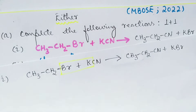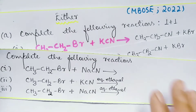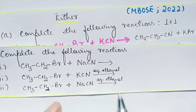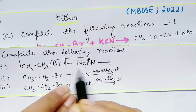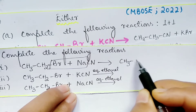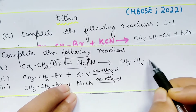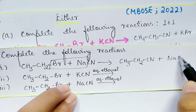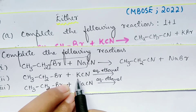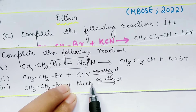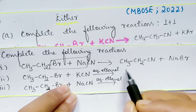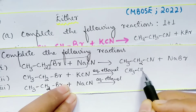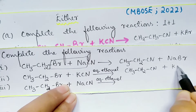They might also ask you like this: in place of potassium cyanide they might use sodium cyanide — same thing. We get ethyl cyanide. If they give you potassium cyanide or sodium cyanide with an alkyl halide in aqueous alcohol, you will get a cyanide. The byproduct is potassium bromide or sodium bromide.